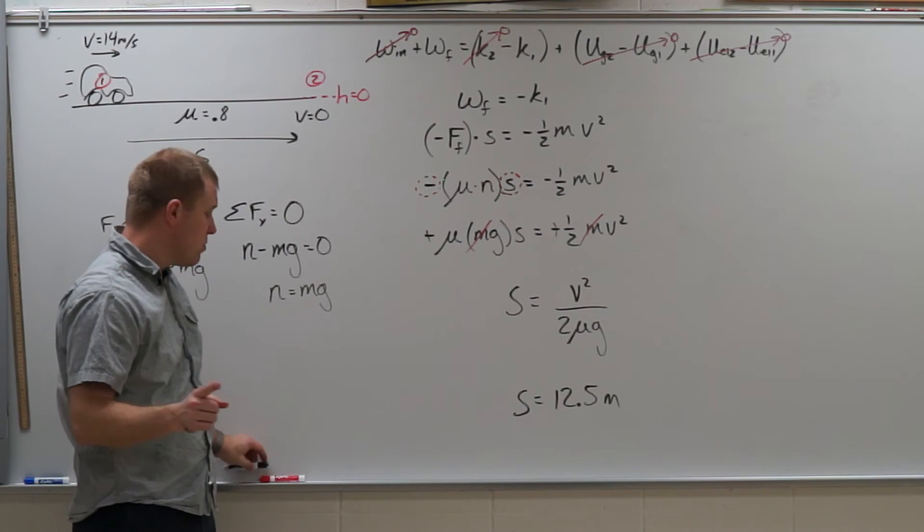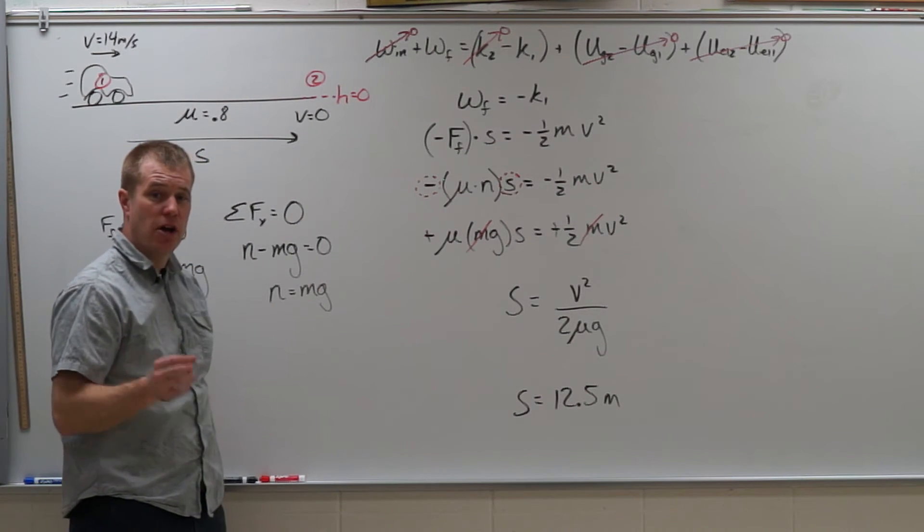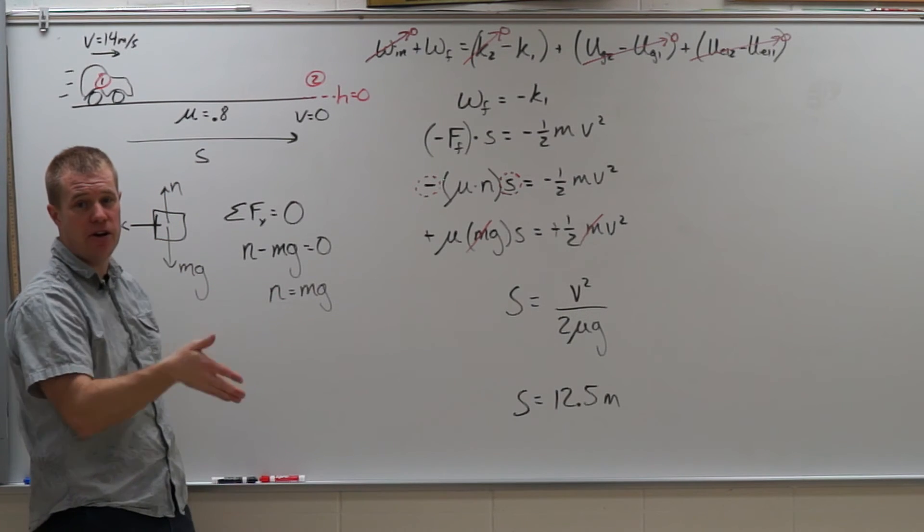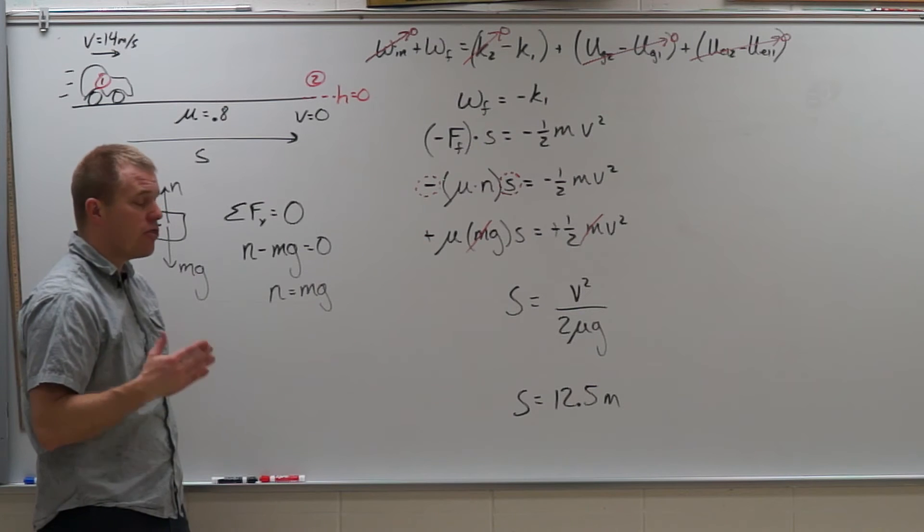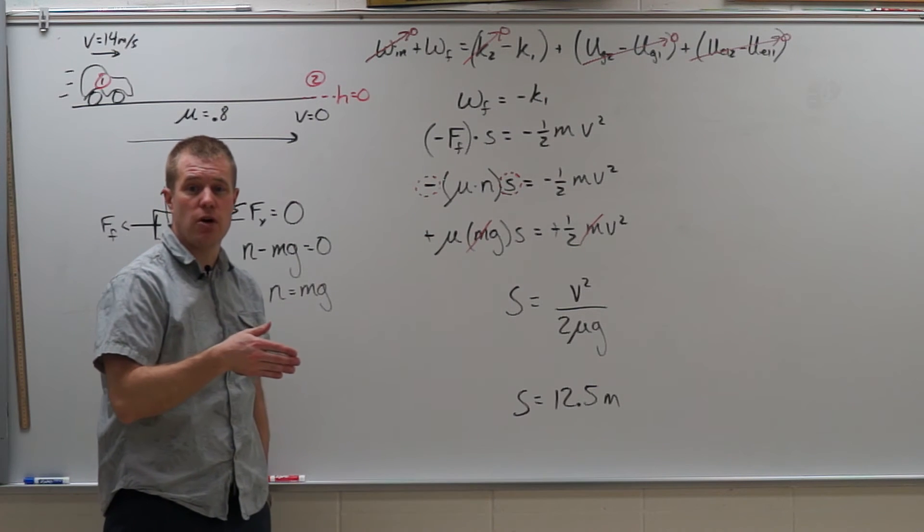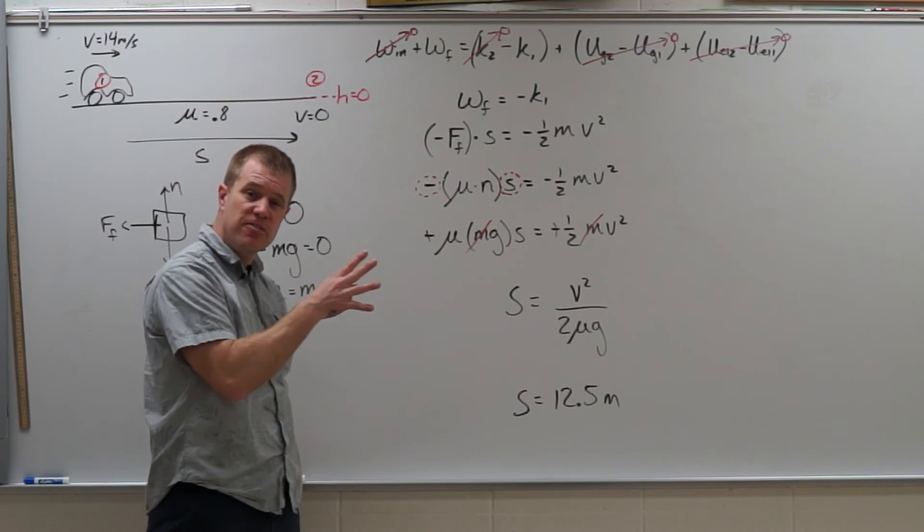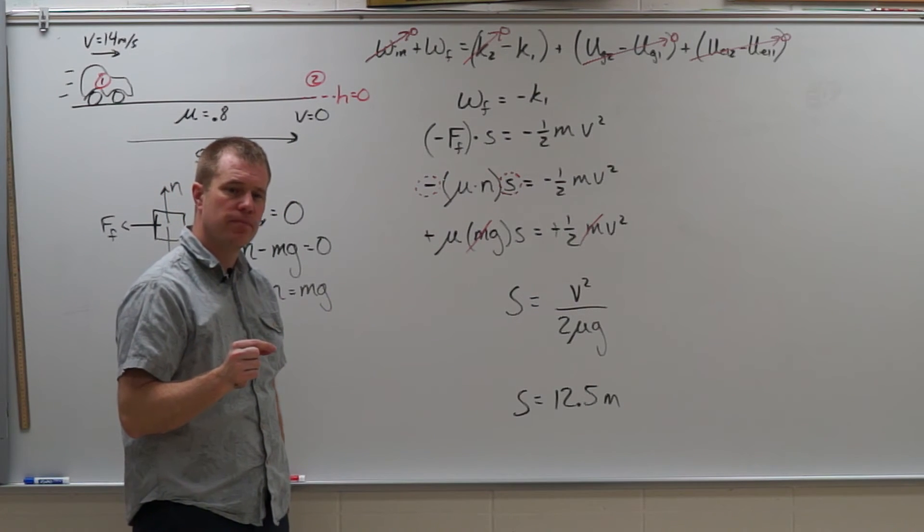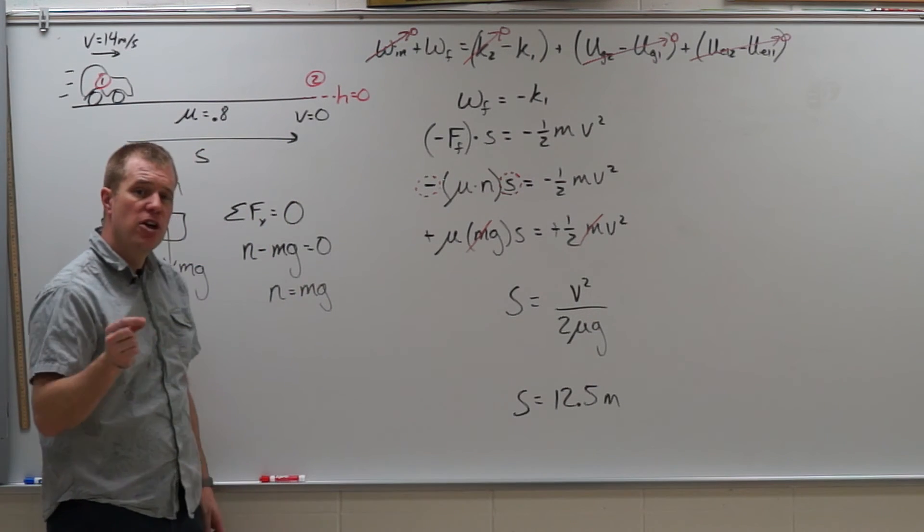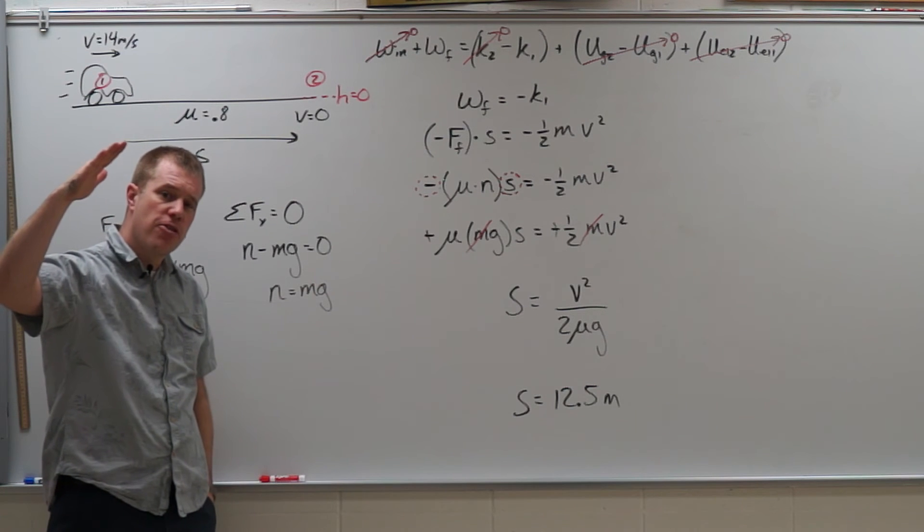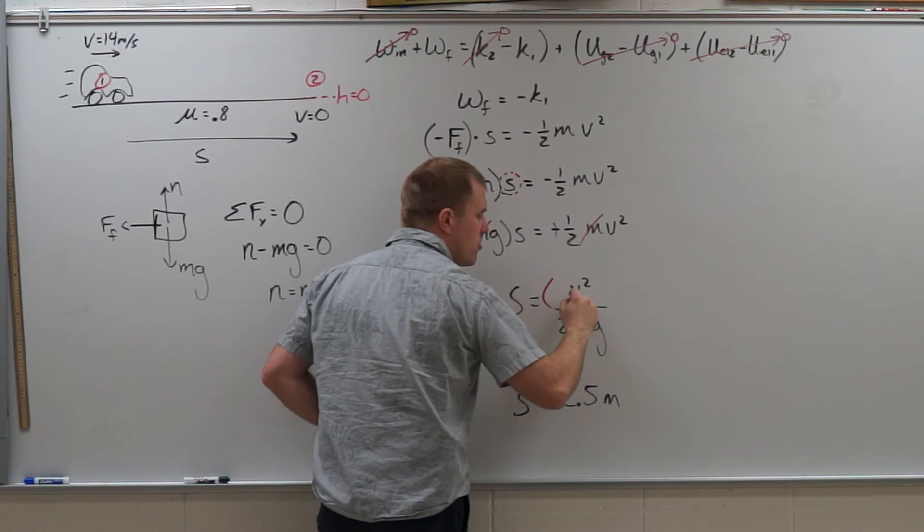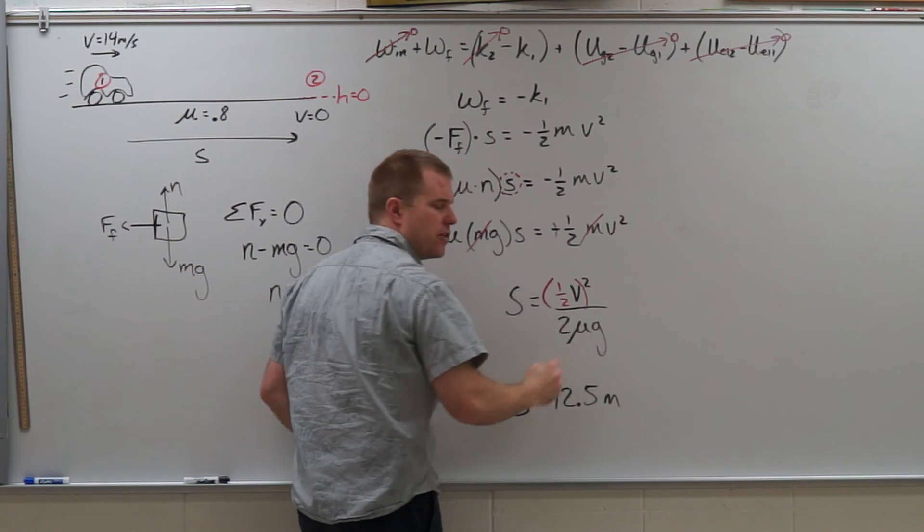Now there is one other question that we can answer with this. So you are driving down the road, speed limit says 25. How fast are you going? 30 of course. So you are driving 30 miles an hour, you get to a school zone. What does the speed limit say? 15 when kids are present. Why do they make you slow down in a school zone? Well, if you slow down from 30 to 15, you went ahead and you decreased your velocity by a factor of 2.